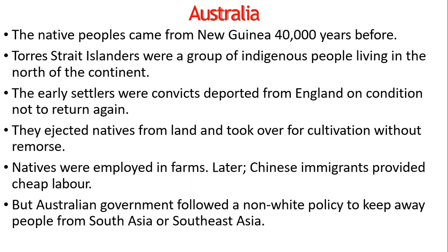Australia is sparsely populated and even now most towns are along the coast, because the central region is an arid desert. The British first arrived in Australia on the coast in 1770. In 1606 Dutch travelers sighted Australia; in 1642 Tasman landed on the island later named Tasmania; in 1770 James Cook reached Botany Bay, which was named New South Wales; and in 1788 a British penal colony was formed and Sydney was founded.